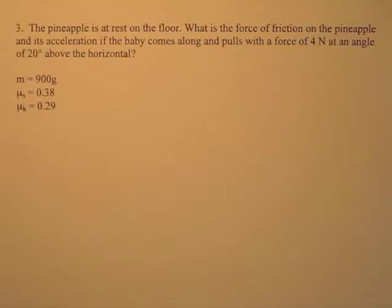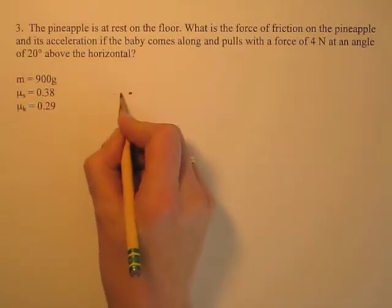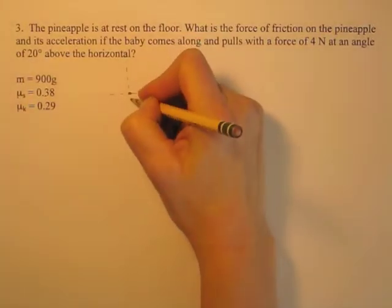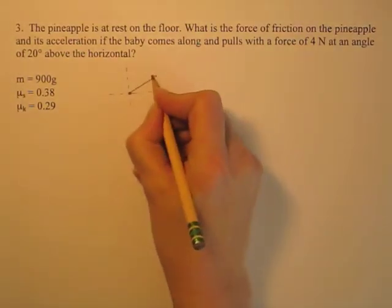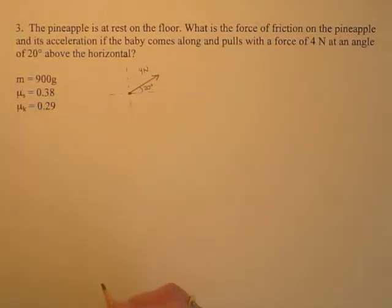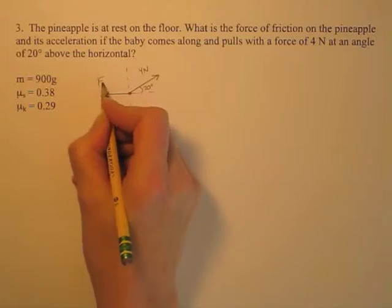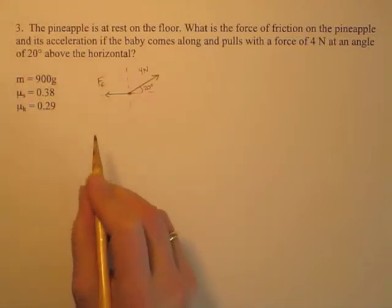In example 3, we have the pineapple at rest on the floor. What is the force of friction on the pineapple and its acceleration if the baby comes along and pulls with a force of 4 newtons at an angle of 20 degrees above the horizontal? We need a free body diagram of the pineapple. The baby is pulling with 4 newtons at 20 degrees above the horizontal and there's some force of friction. We don't know if it's moving yet, so we don't know if it's kinetic or static.